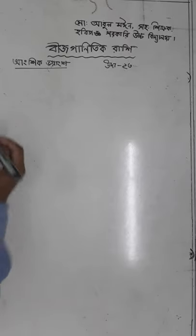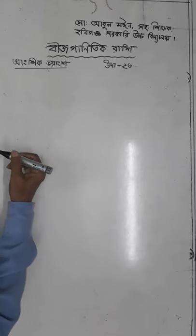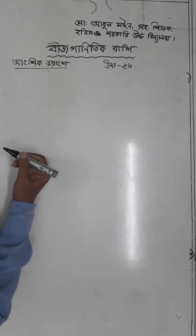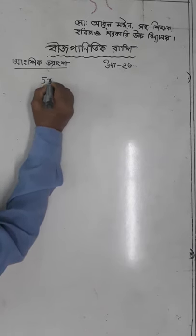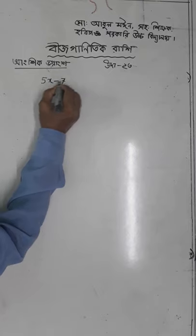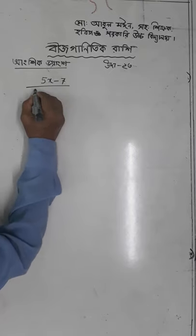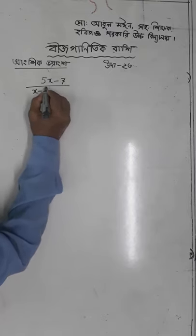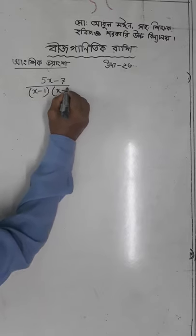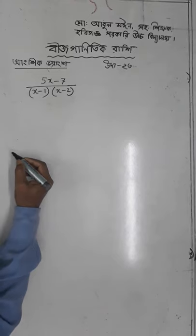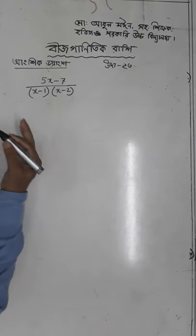Now let us see, 5x minus 7 divided by x minus 1 into x minus 2. Let us see the difference between the 2x minus 1 into x minus 1, this is the difference.